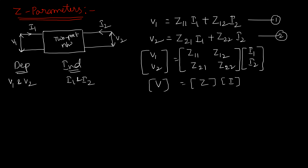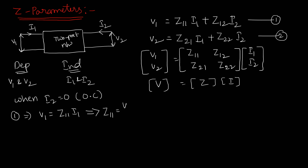Our aim is to find these Z parameters. Let us consider the case when I2 = 0. Since current equals zero, port 2 will be open-circuited. From the first equation, V1 = Z11·I1, so Z11 = V1/I1 — this is called input impedance. From the second equation, V2 = Z21·I1, so Z21 = V2/I1.